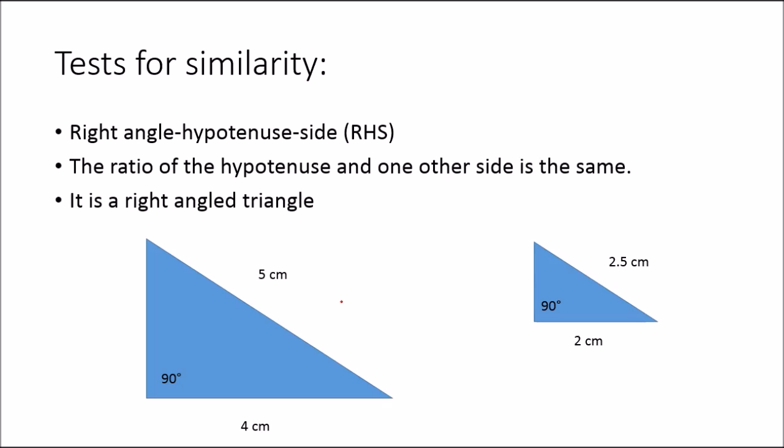So those are your tests for similarity. You just need to identify the triangles. Now remember that although they're similar, they can also be rotated and they can be reflected and things like that, which may make them look a little bit different. So you just have to be careful to match up the corresponding sides and angles correctly. Check your ratios, and you should be able to establish similarity.